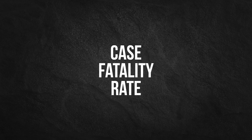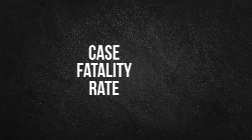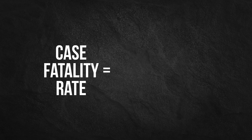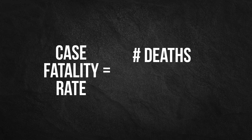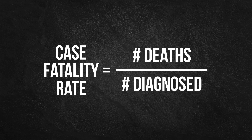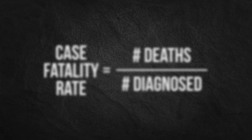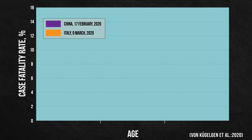Case fatality rate is the most commonly discussed measure of the risk of dying from COVID-19. It's the number of people who have died from the disease divided by the total number of people diagnosed with the disease. For simplicity, let's repartition China and Italy's datasets into two groups: below 70 and 70 and above.